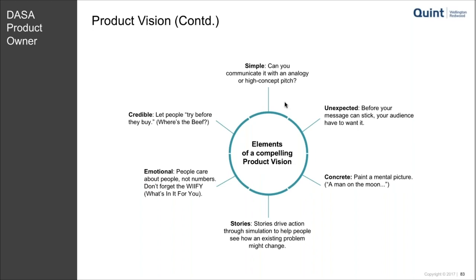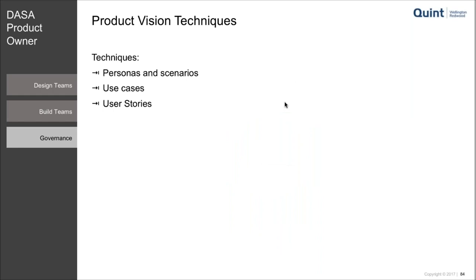Here's a slide with what's almost a hidden word. If you look at the aspects of what makes a compelling product vision — Simple, Unexpected, Concrete, Credible, Emotional — you'll actually see it spells the word SUCCESS, although it's spelled slightly wrong as it should end with two S's. It's a nice acronym to help remember the aspects of a product vision. Tell students that some of these will be used in the exam — you might get questions about what 'simple' means in a product vision, or how concrete it needs to be.